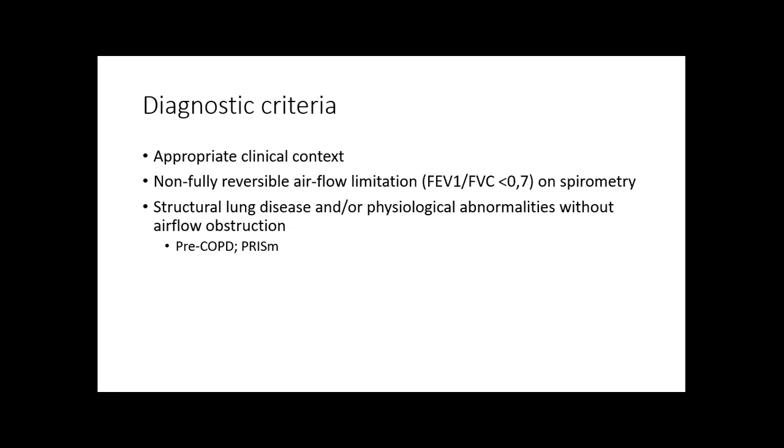Pre-COPD and PRISM are patients who have disease or physiologic abnormality without airflow obstruction. Pre-COPD patients have FEV1/FVC ratio more than 0.7 but FEV1 lower than 80% of predicted. PRISM is preserved ratio with impaired spirometry. These patients have reduced FEV1, increased residual volume indicating hyperinflation and air trapping, and reduced DLCO indicating parenchymal and alveolar damage.